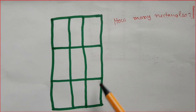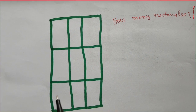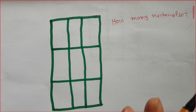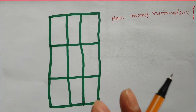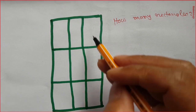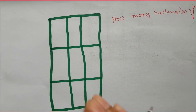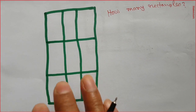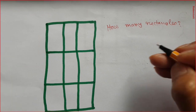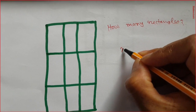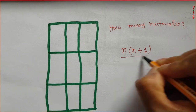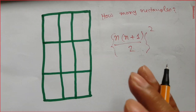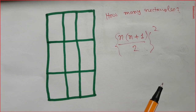Here's an interesting problem: how many rectangles can you find in this total area? Counting them one by one — 1, 2, 3, 4, 5, 6, 7, 8, 9 — would take around 5 to 6 minutes to find all combinations. But there is a simple formula: n times (n+1) divided by 2, whole squared, where n is the total number of unit squares on one side.